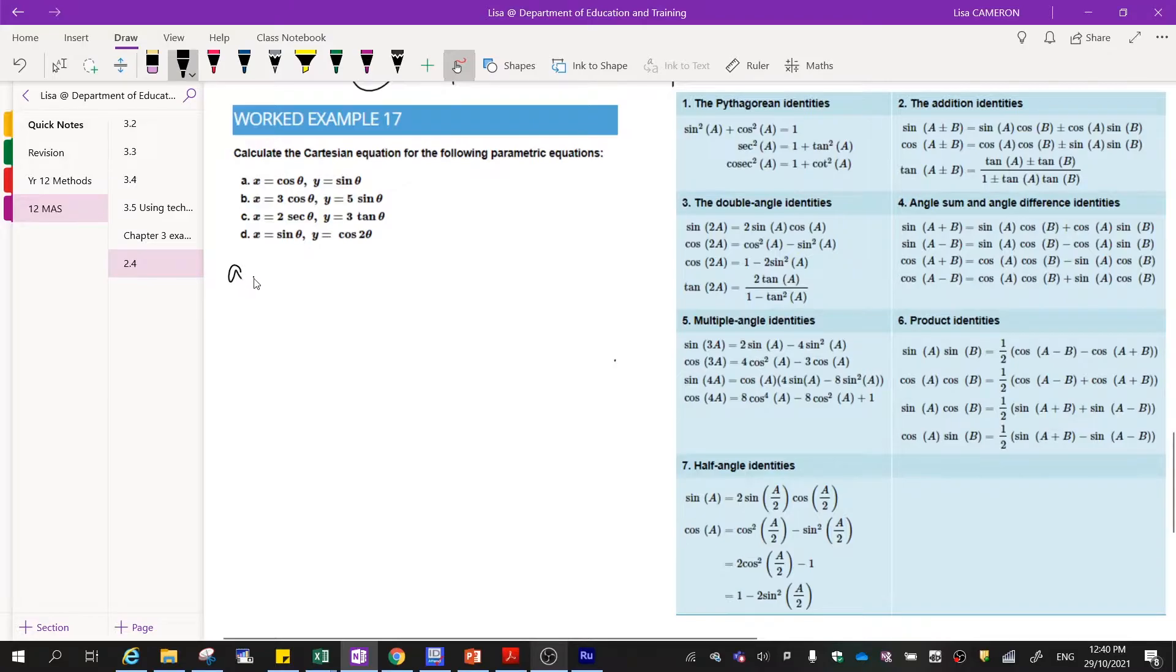So here we go. Part A: here we can see we've got x in terms of cos and we've got y in terms of sine. So if I look over here at our identities, I'm trying to look for something that can match those together. So if I can get a sine squared and a cos squared, I can get it to equal one.